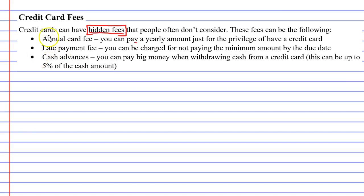Here are some examples of what you can get for fees. You can get an annual card fee, which is basically a yearly amount you pay just for the privilege of having a credit card. We also have late payment fees — as long as you never pay your minimum amount late, you shouldn't get this.